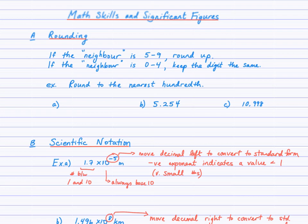Looking at example B, 5.254 — we're chopping it off after the 5 and rounding there. The neighbor is a 4. Looking at that neighbor, being that it falls in the 0 to 4 range, we will keep that 5 the same.